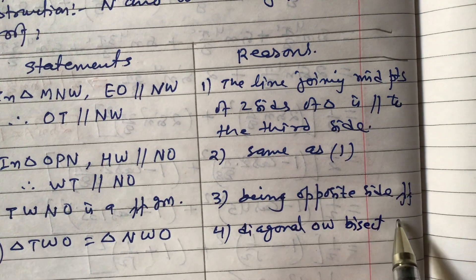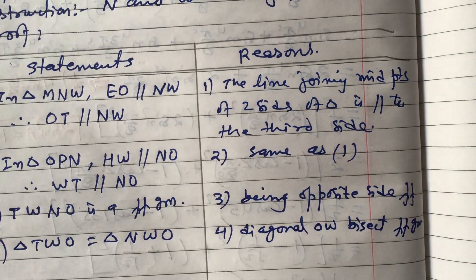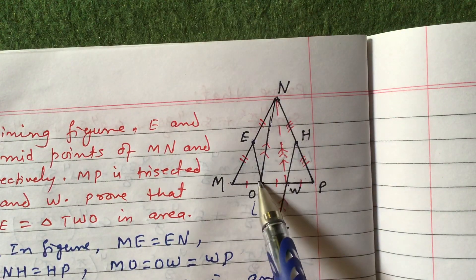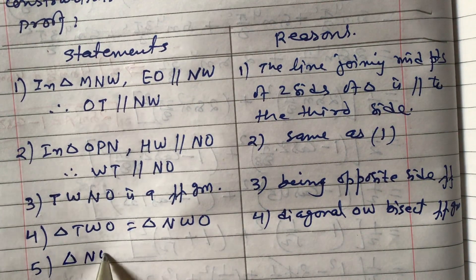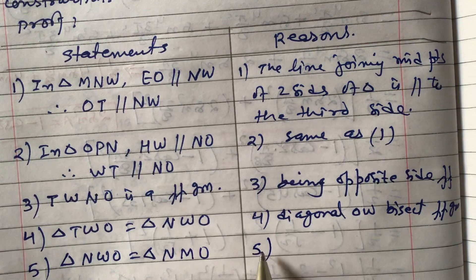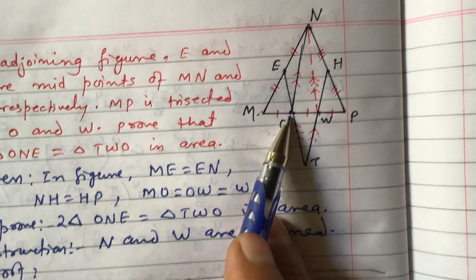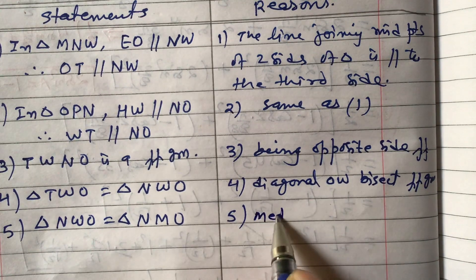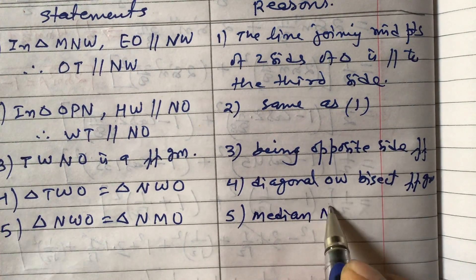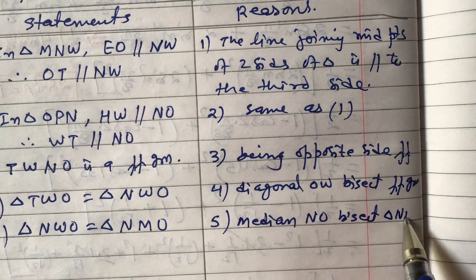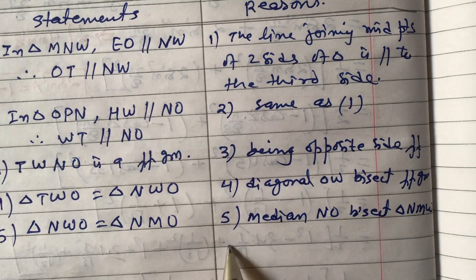Statement 5: In triangle NMW, NO is the median. Therefore the median NO bisects triangle NMW, so triangle NWO equals triangle NMO in area.